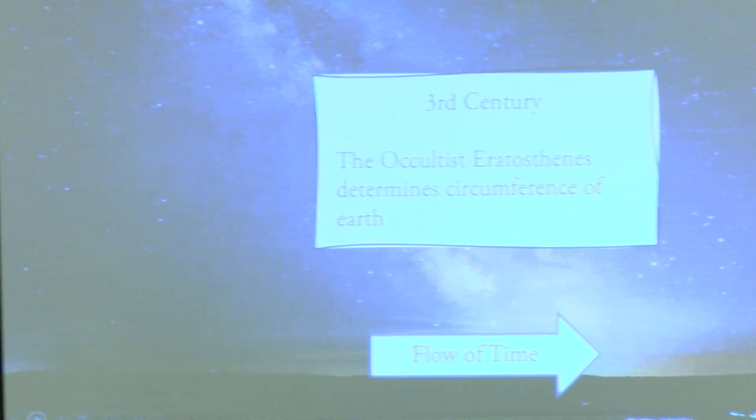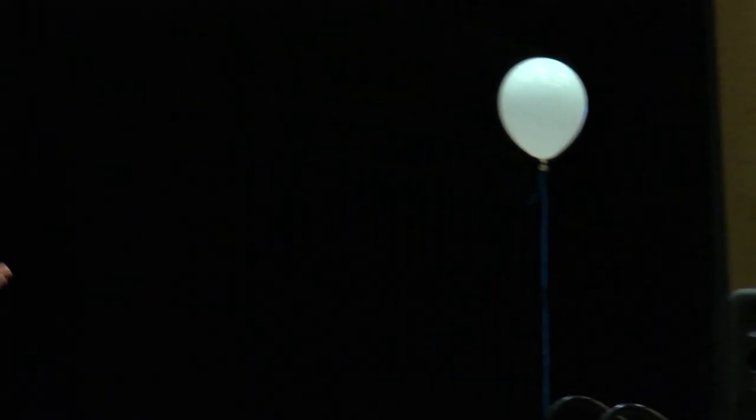An obelisk is the occult symbol of their god — the phallic symbol of Nimrod. The shadows of it dictate the circumference of the earth. I believe it was around 28,000 he came up with, and yet we now know it's about 24,900. So by the time we continue to move on, it just keeps growing and growing every year, a new layer, something to break down this model of what everybody in the world always believed.